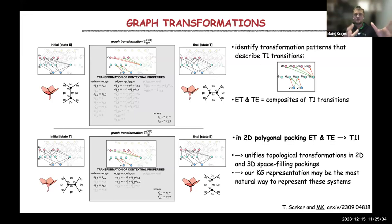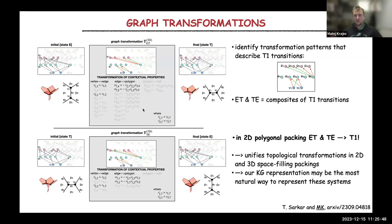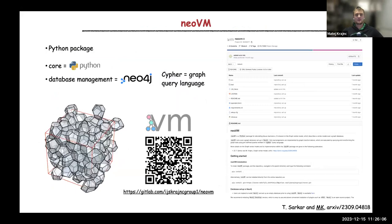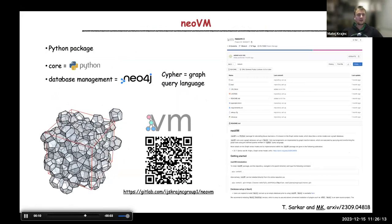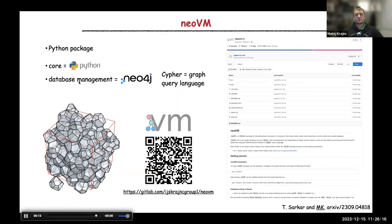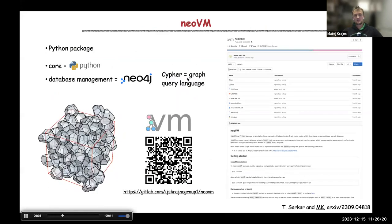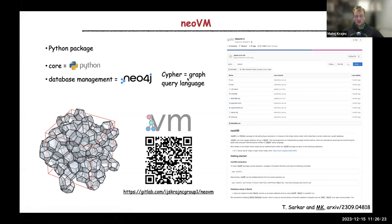We can apply these 3D graph transformations directly to a 2D model of polygonal packings, and both ET and TE transformations reduce exactly to a T1 transition — unifying topological transitions across 3D volume-filling packings and 2D surface packings. We implemented the graph vertex model in a Python package named NeoVM, available on GitLab. Its core is written in Python and relies on Neo4j, a database management framework using Cypher, a graph query language.